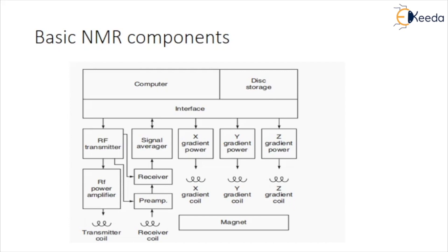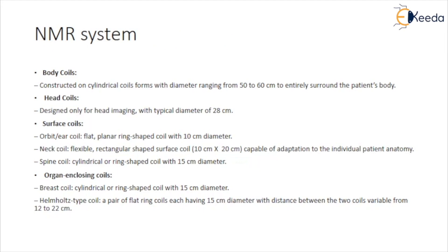The RF coils can be either a single coil serving both transmitter and receiver, or two separate coils that are electrically orthogonal. Detection system: the function of the detection system receiver is to detect the nuclear magnetization and generate an output signal for processing by the computer. The NMR system has the following available coils.